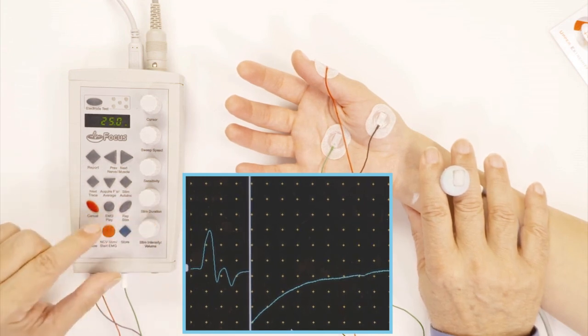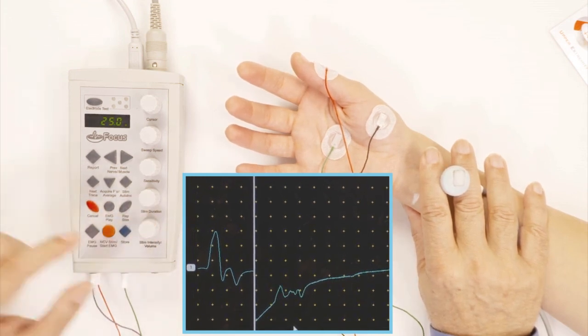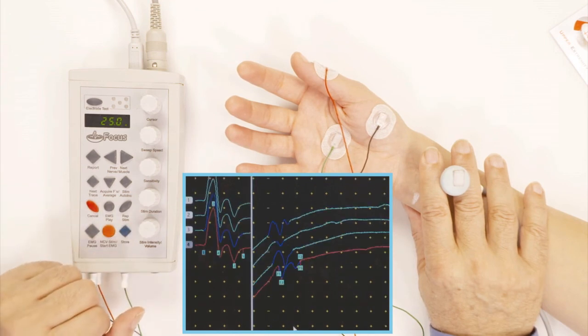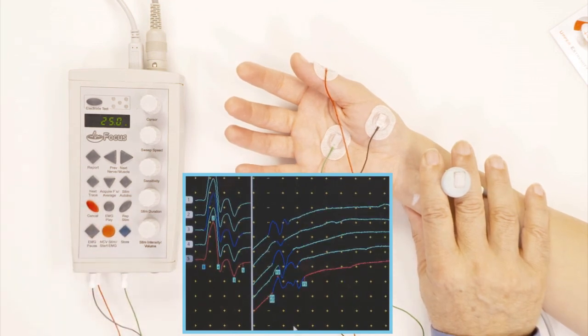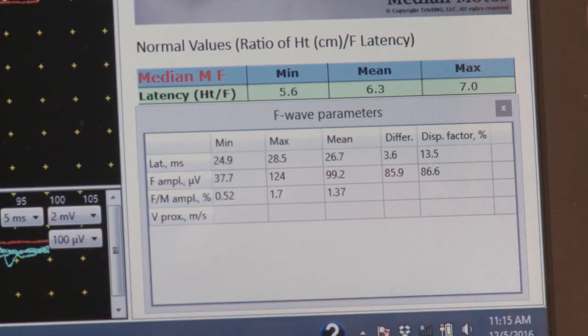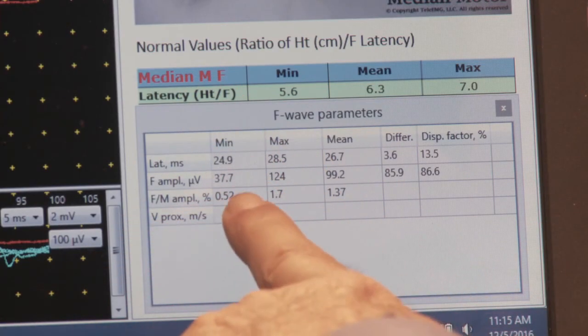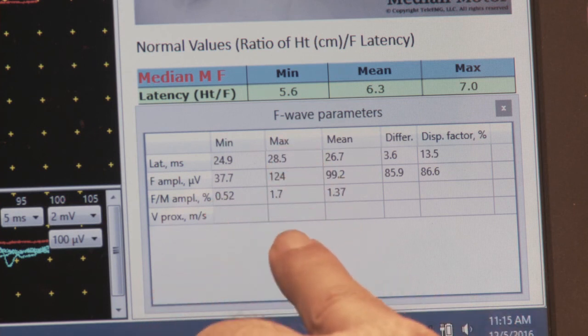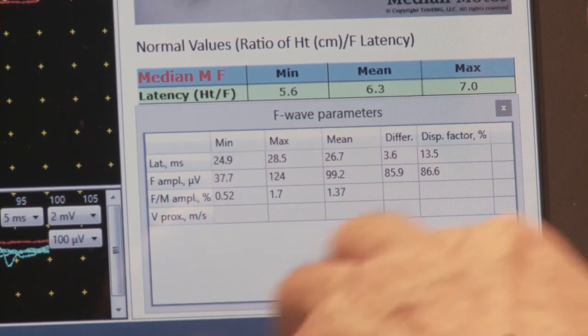And again, you don't always see it. Sometimes it disappears, but now it comes back. So, I'm happy now that we got five good F-waves. And you can see from this shot here, you can see this table shows you the measures of the F-wave. The minimum latency, the maximum latency, and the mean latency. And that's the F-wave.